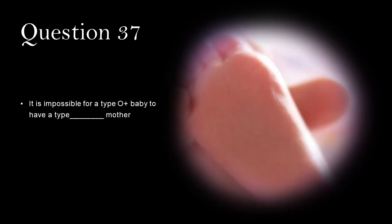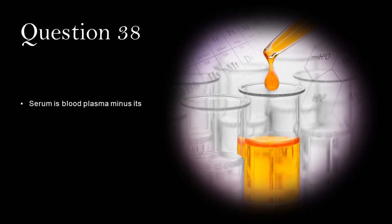It is impossible for a type O positive baby to have a type AB negative mother. Serum is the blood plasma minus its clotting proteins.